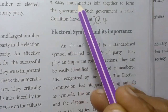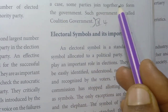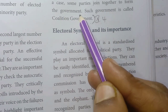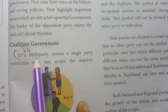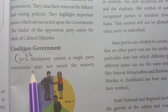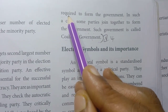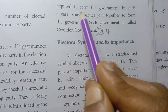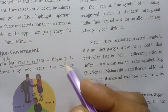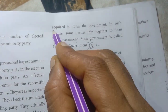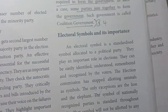In such a case, some parties join together to form the government. Such a government is called a Coalition Government. In a multi-party system, if a single party does not secure the majority, the parties will join together to form the government, which is called a Coalition Government.